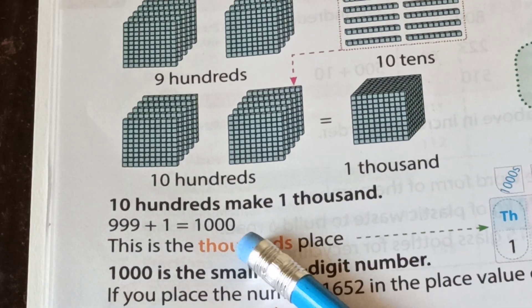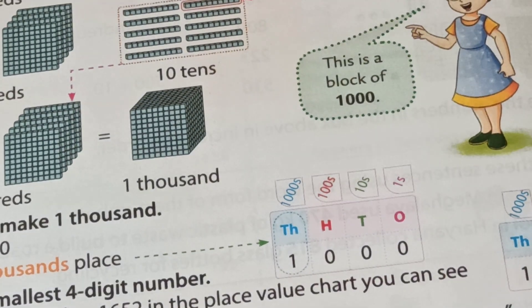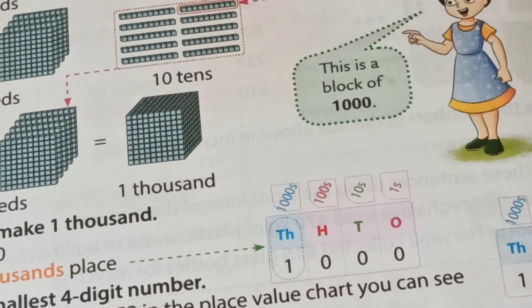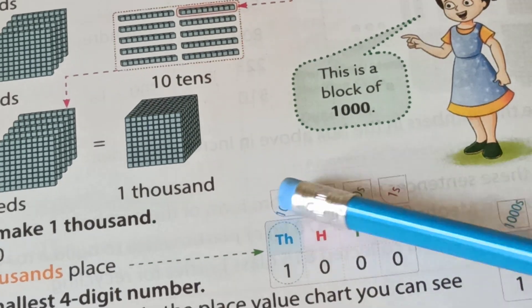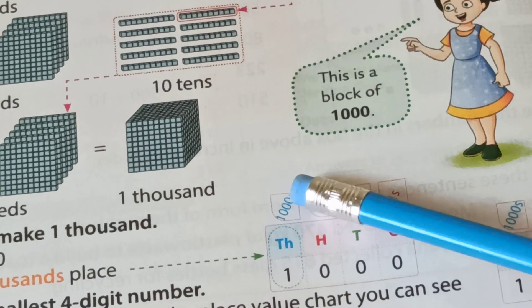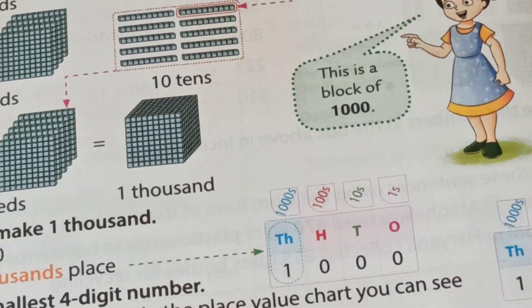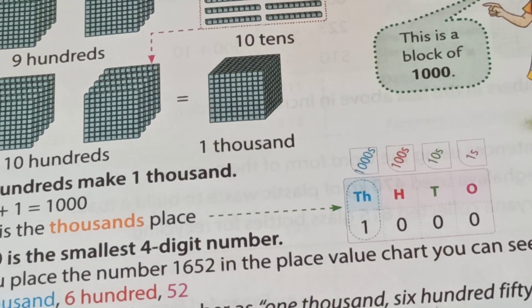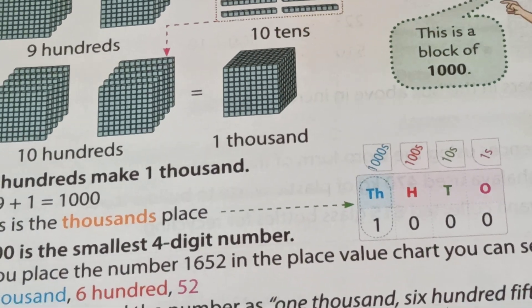This is the thousands place. We already know ones place, tens place, hundreds place — but now we learn thousands place. For thousands, we write TH. One thousand is the smallest four-digit number. Always remember this sentence — it is very important.